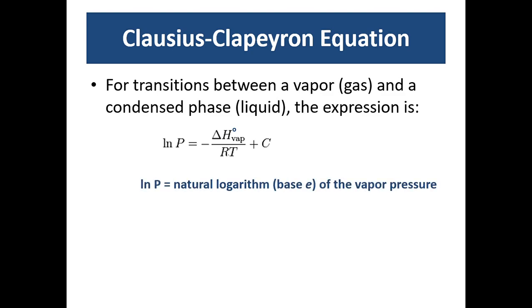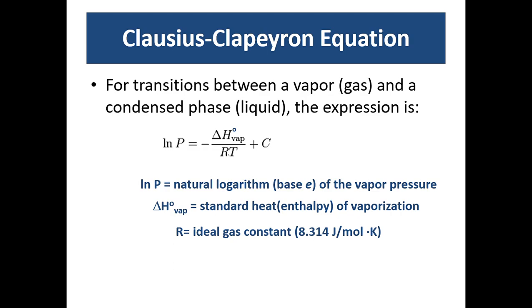In this equation, ln P is the natural logarithm of the vapor pressure. Natural logarithm is using base E instead of base 10. Delta H_vap is the standard heat or enthalpy of vaporization of the liquid. R is the ideal gas constant. But in this case, we don't use the liters atmospheres units, we use joules. And T is the absolute temperature, that is the temperature in Kelvin. This constant C here is not something we're going to be evaluating in this experiment.